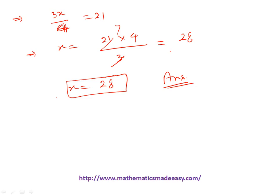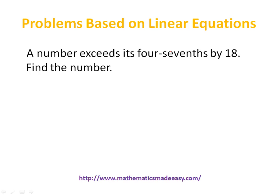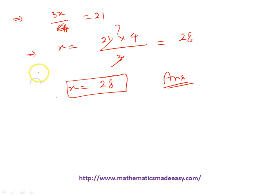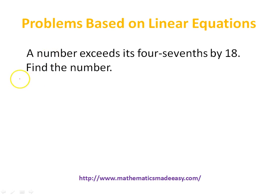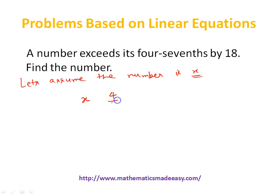Moving to the next question: A number exceeds its 4/7th by 18 — find the number. Let's assume the number is x. A number exceeds its 4/7th by 18 means x minus (4/7)x equals 18. We have a simple linear equation in x, and we will solve it to find x.